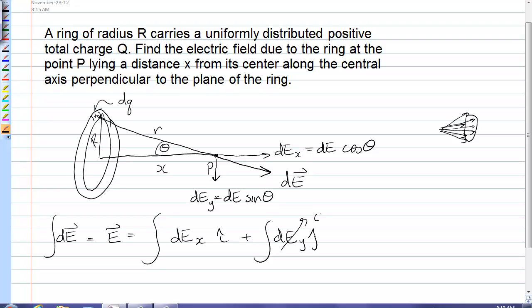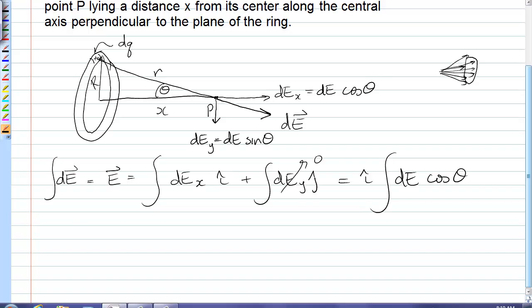So this integral would be zero. And so what I'm needing to do is simply integrate dE cos theta. Okay, and so dE is the usual k dq over r squared. And now I have a cos theta.